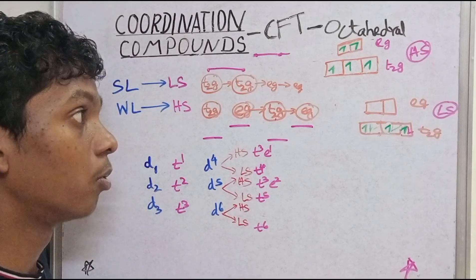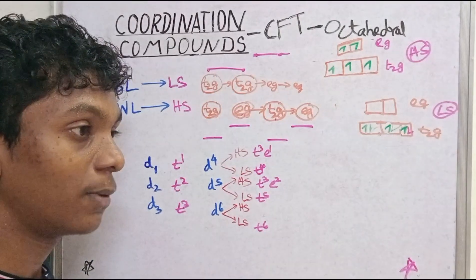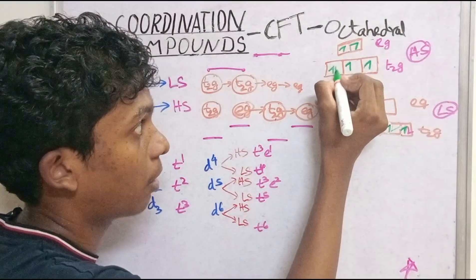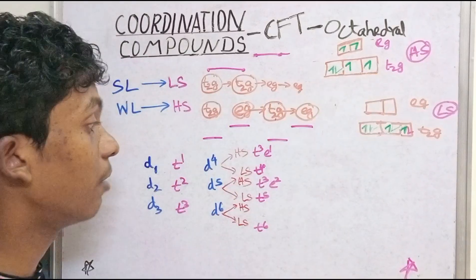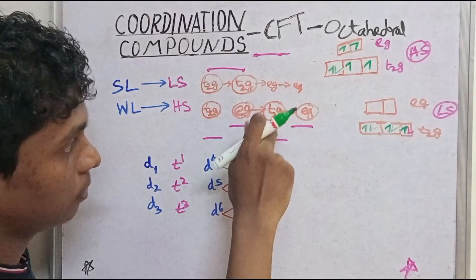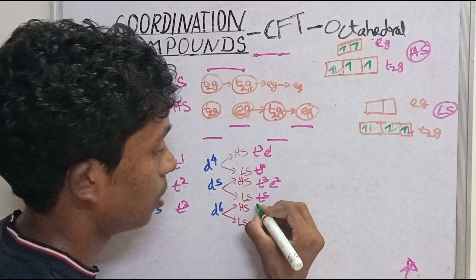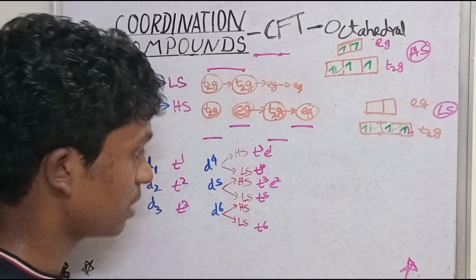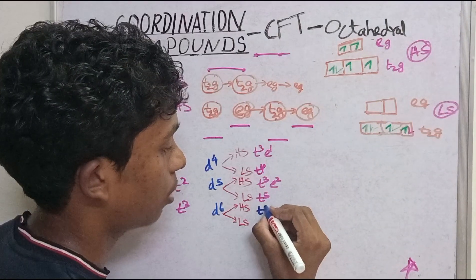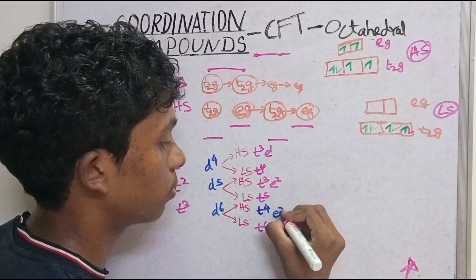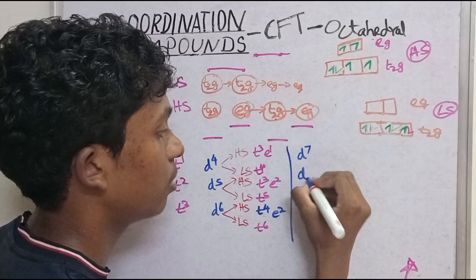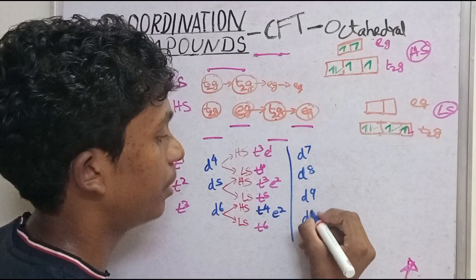But for high spin D6, the 6th electron goes to eg. High spin D6: we start pairing in T2G first but then place in eg. So high spin D6 gives T2G⁴ E2. Now we move to D7, D8, D9, D10.